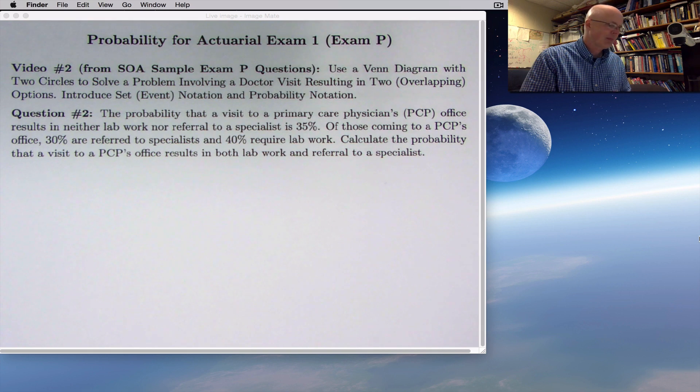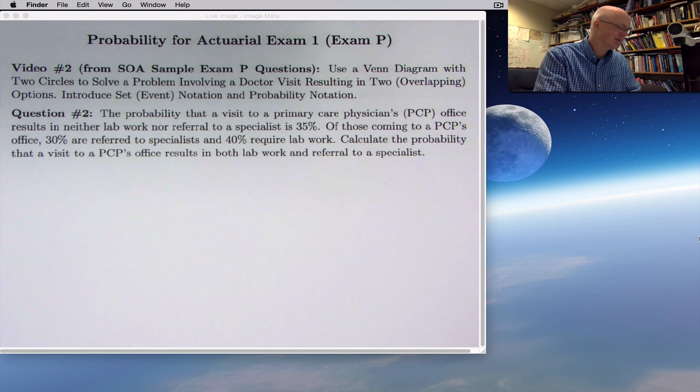This particular question is about a visit to a doctor's office, so insurance would be involved. As in the first video, I'm going to be using a Venn diagram to help me solve the problem. It's a fairly easy problem, even easier than the one in the first video. Because of that, I also want to introduce some new ideas: set or event notation and probability notation.